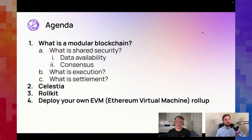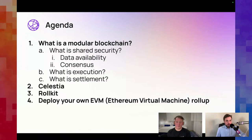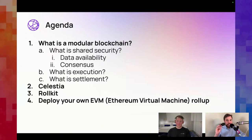The agenda: first we'll talk about what a modular blockchain is and break that into four core functions. Then we'll talk about Celestia itself, then Rollkit — the new SDK — and finally deploying your own EVM rollup using Celestia as a shared security layer. You'll know you've really got it if you can explain what execution, settlement, consensus, and data availability each mean in a one-liner.